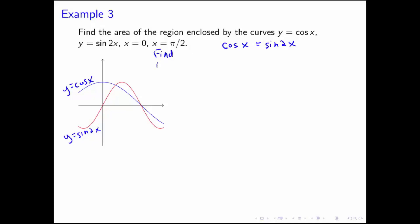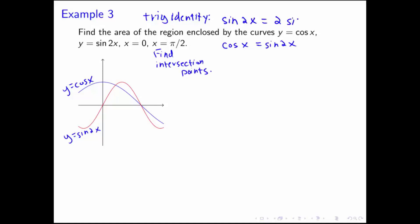Find the intersection points: where is cosine x going to be equal to sine 2x? This is a little tricky to solve since there's no cosine x on both sides to cancel or factor out. This is where a trig identity will be useful. We're going to use the identity that sine of 2x is equal to 2 sine x cosine x.